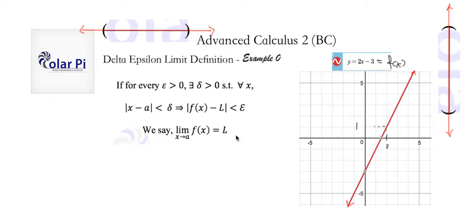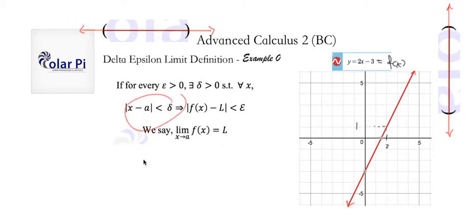But wait — what does that mean? In math, we use delta and epsilon to represent very small numbers generally. This symbol means 'there exists,' and this means 'for all.' To make sense of this, let's first visually represent it. What does the absolute value of x minus a being less than delta mean visually?